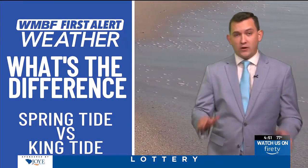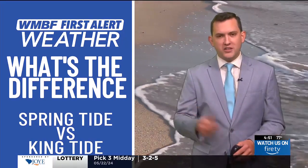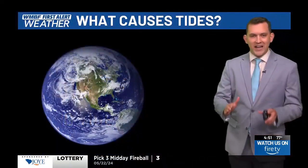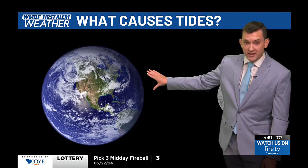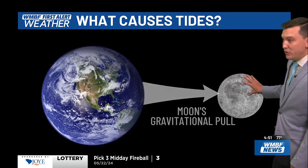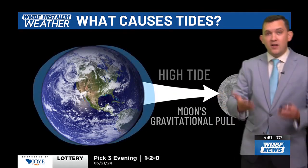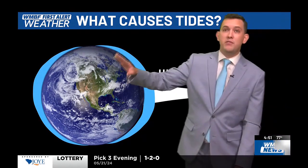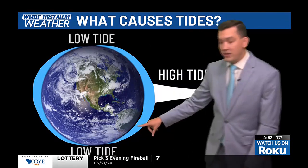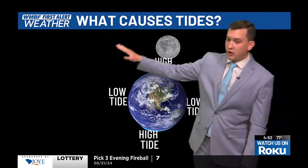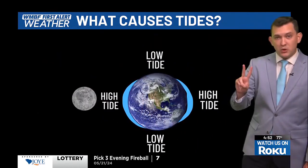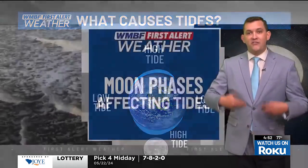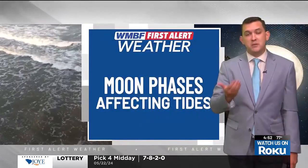Spring tides and king tides are very similar, but there are some differences. To explain the differences, we've got to start with the basics. What creates tides? We have Earth covered 70% by water and the moon. With the moon's gravitational pull, that's what creates the high tides. You get high tides on two sides of the Earth and low tides on the other two sides. As the moon orbits around the Earth, that's why we have two high tides and two low tides every single day. But there are some factors that can affect the high tides, such as moon phases.